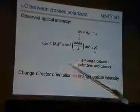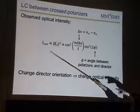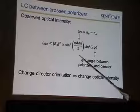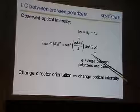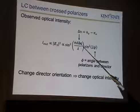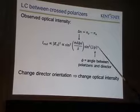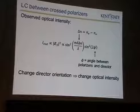The intensity works out to this expression — it's the product of two sine-squared factors. There's one sine squared of π times the thickness times Δn, the difference of these indices of refraction, divided by the wavelength. And then a sine squared of 2φ, where φ is the angle between the polarizers and the director.